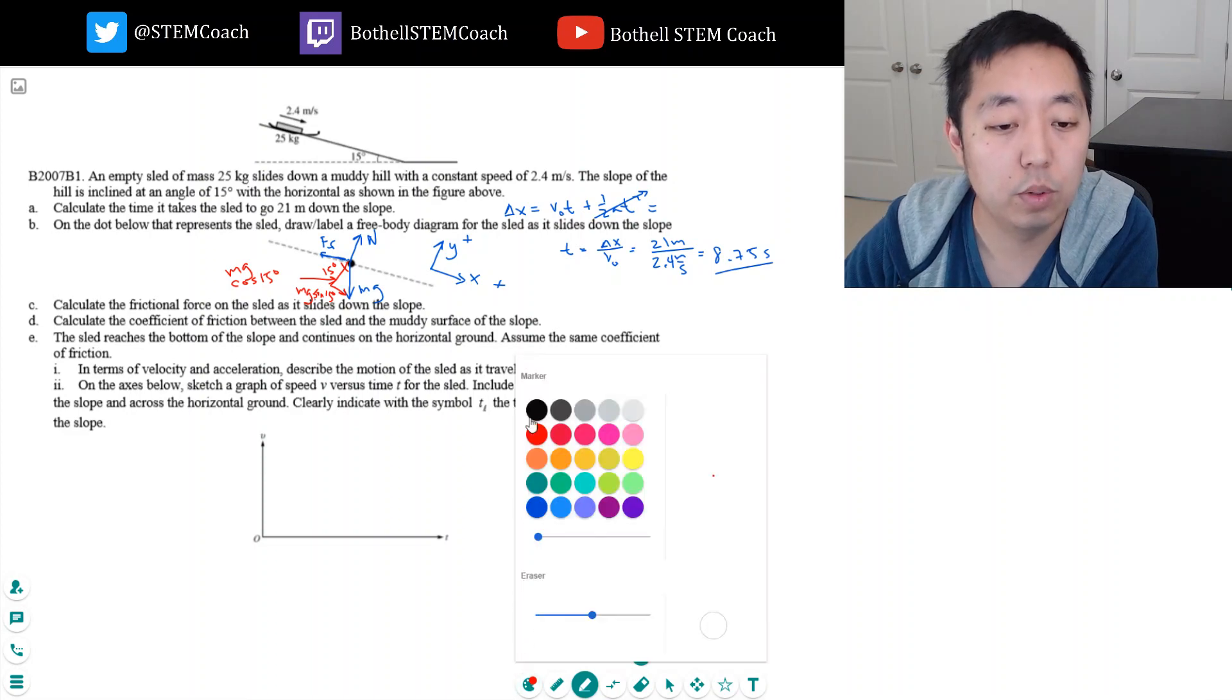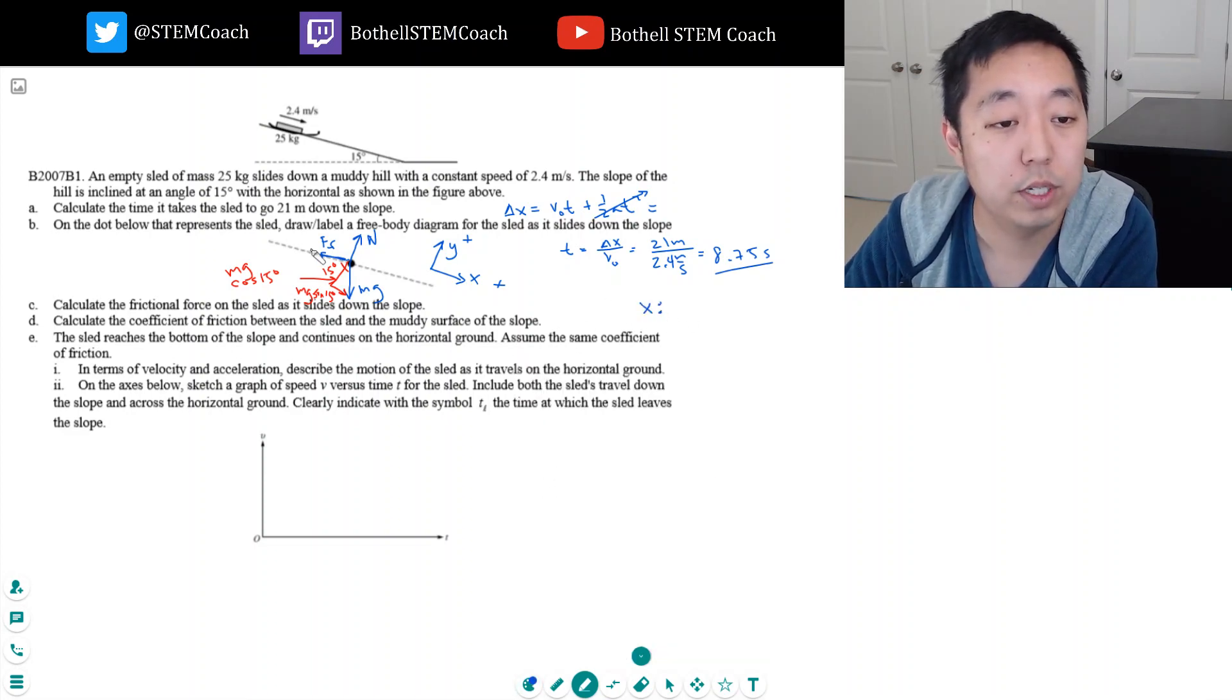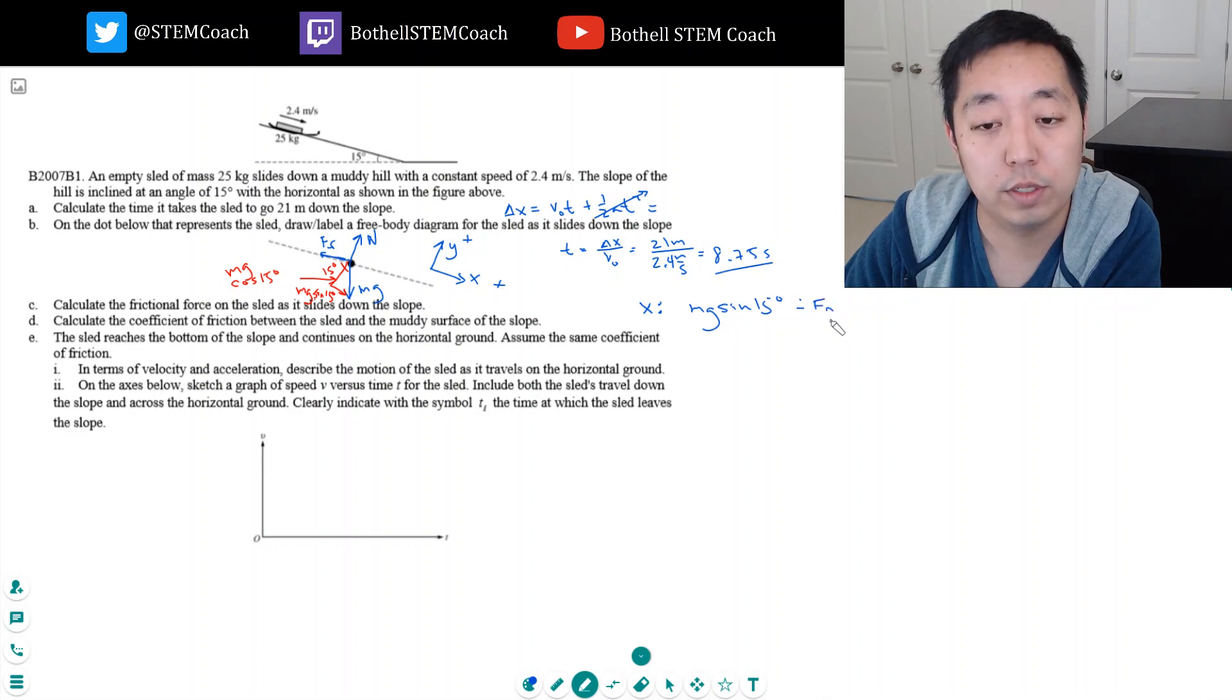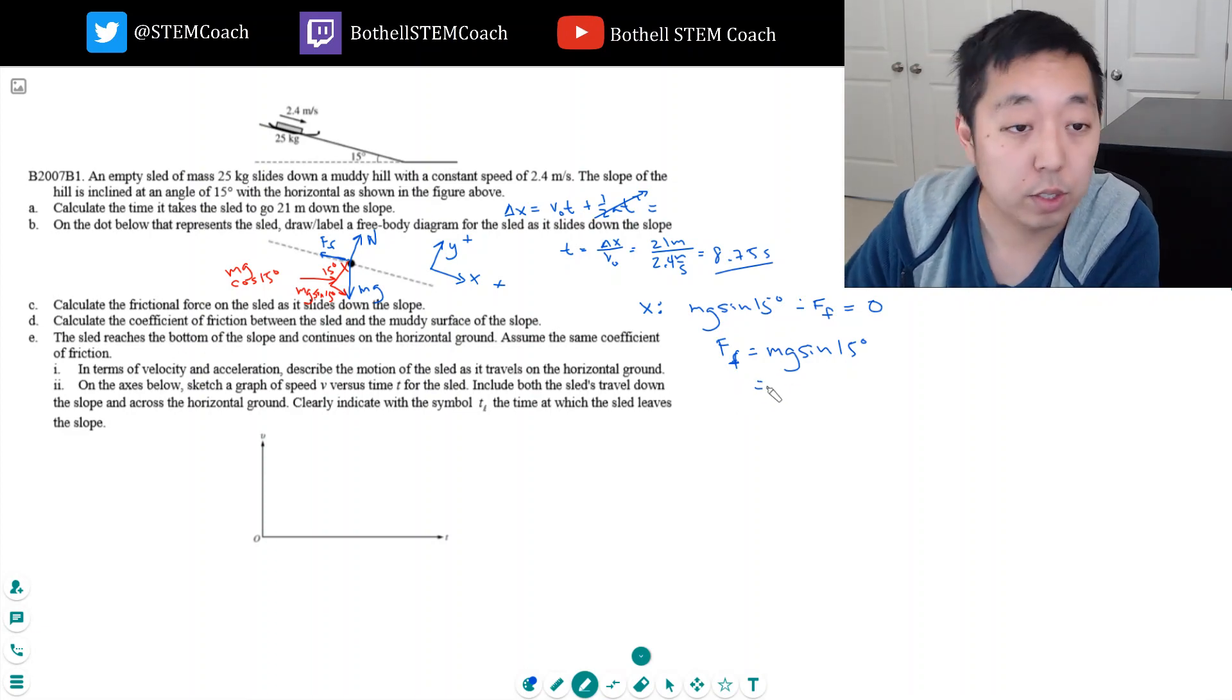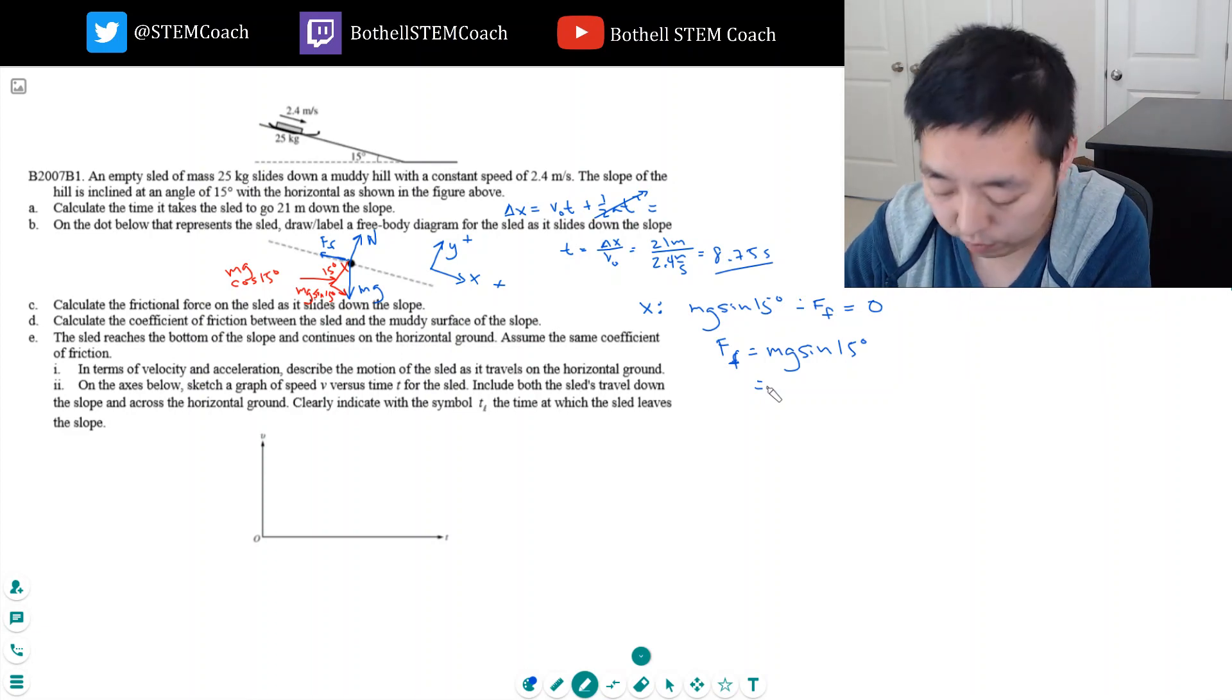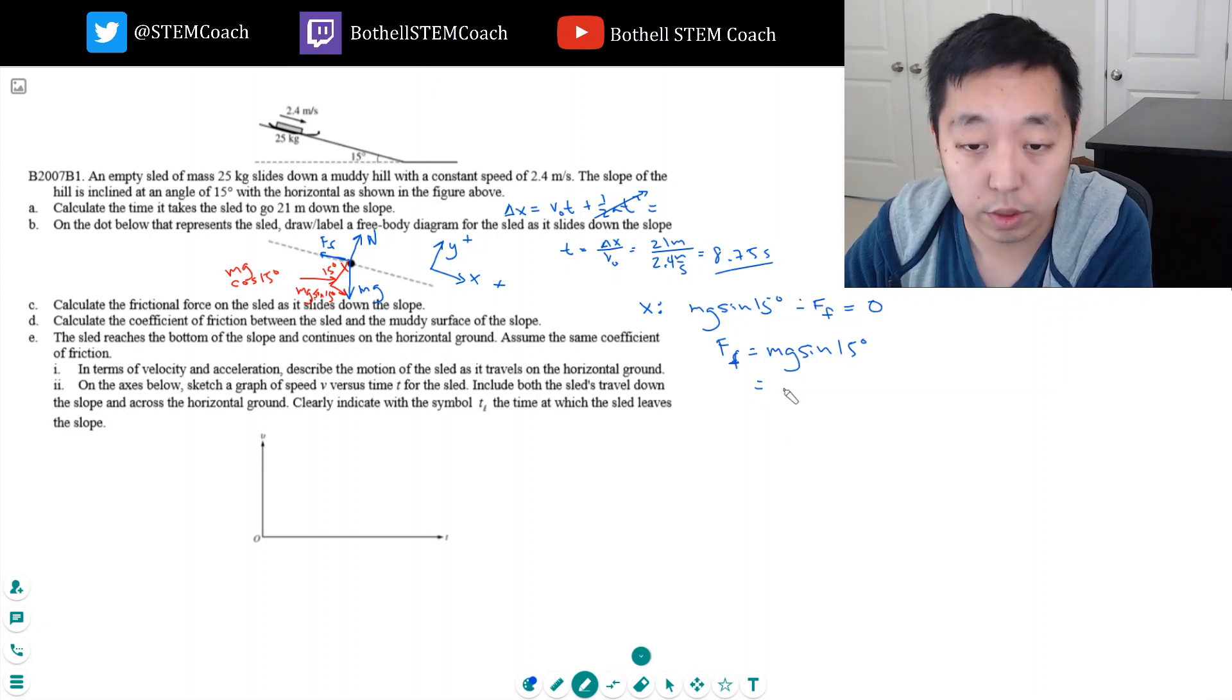So we're going to do the net force. In the x direction, I have mg sine 15 degrees that's in that direction, and then force of friction - minus the force of friction has to equal zero. So force of friction equals mg sine 15 degrees, and I know m and I know g and I know sine 15 degrees. So I can calculate this force of friction - oh yeah, I am interested in the force! That's all I'm asking for at this point. So mg is 25 times 9.8 times sine 15: 63.4 newtons.